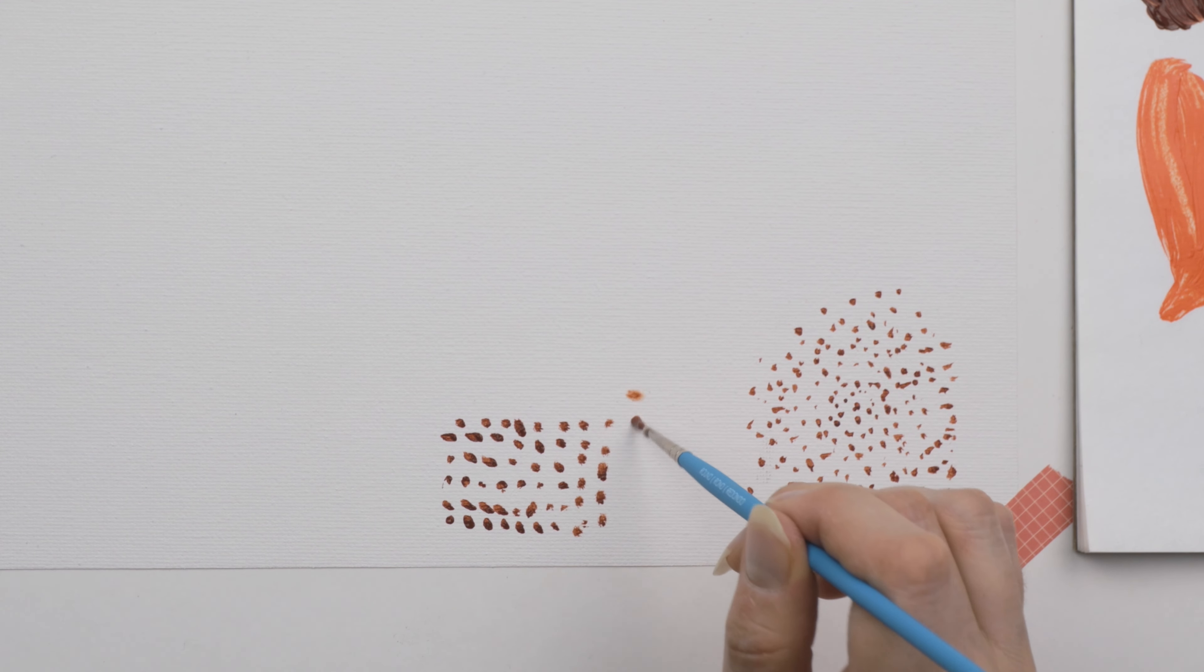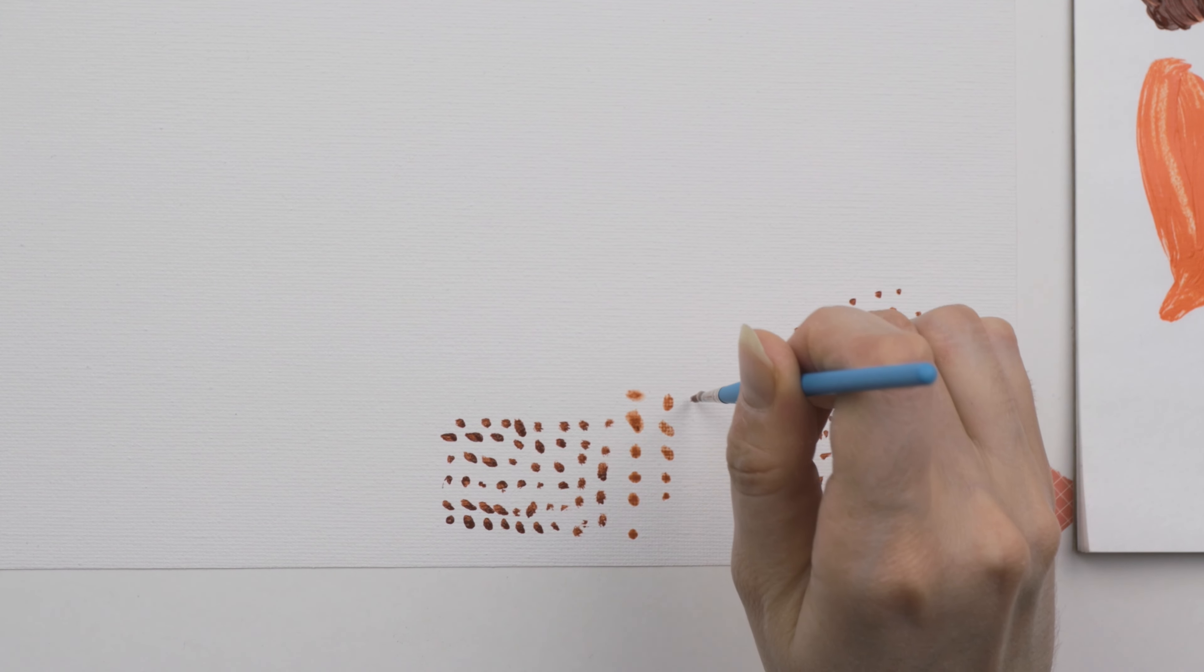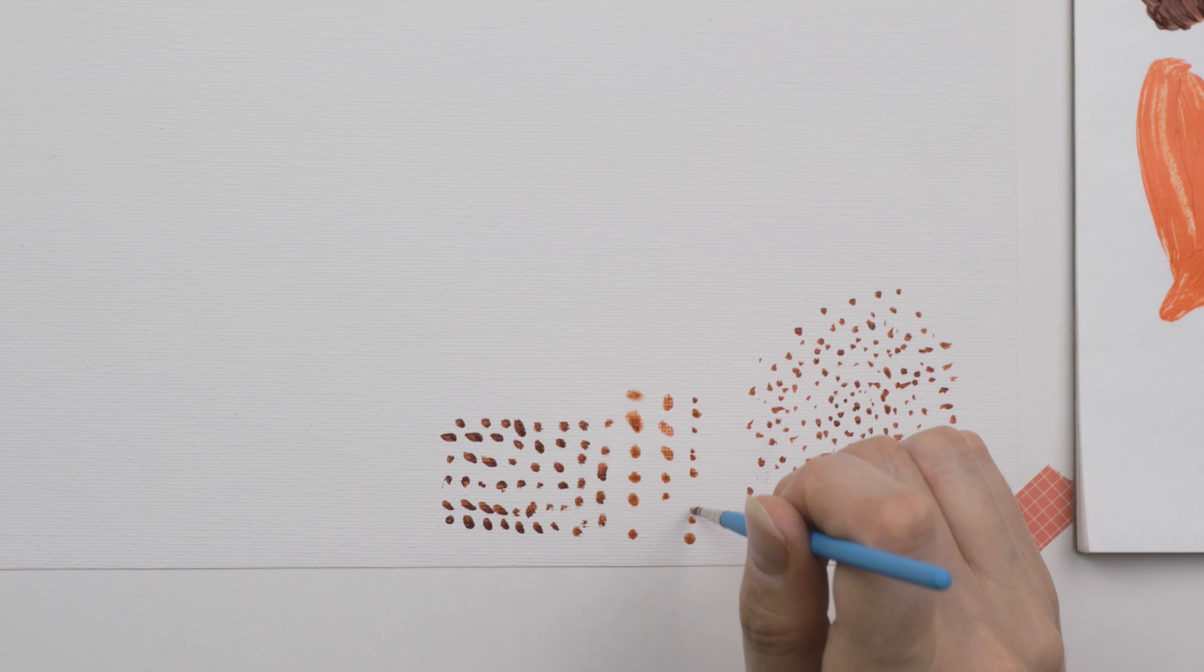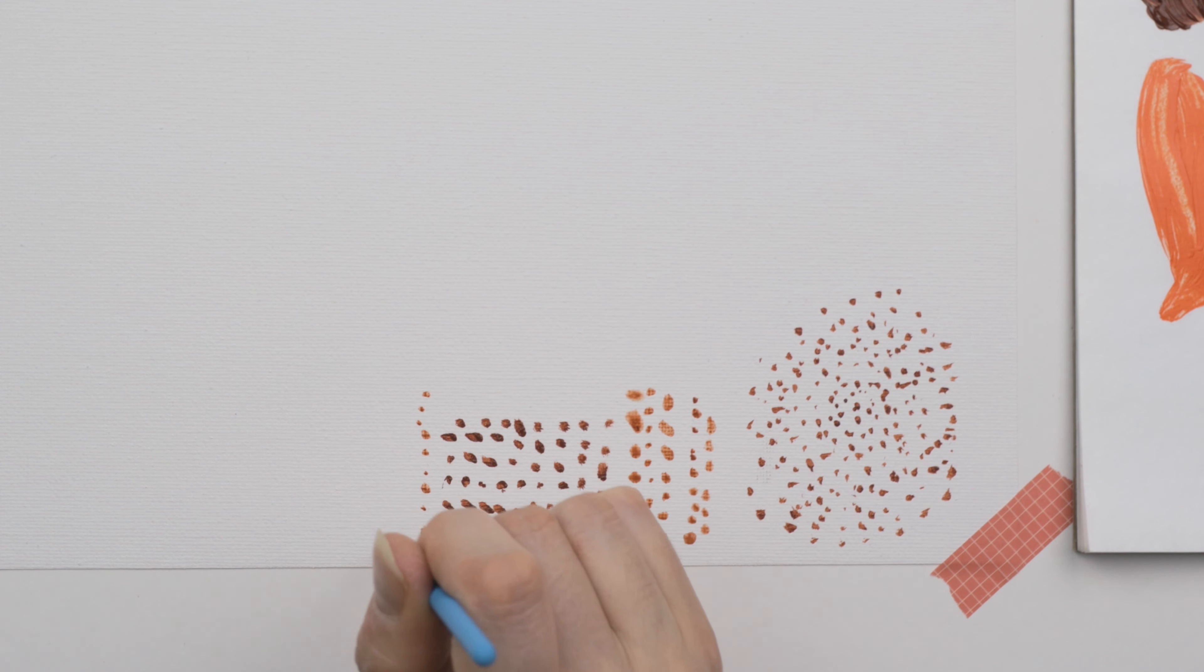As I'm showing here, you can vary the size of your dots by pressing a bit harder with your paintbrush. Or you can use more water or more medium to get more watery, flowy dots. You can also change up the size of your brush if you want smaller or bigger dots.